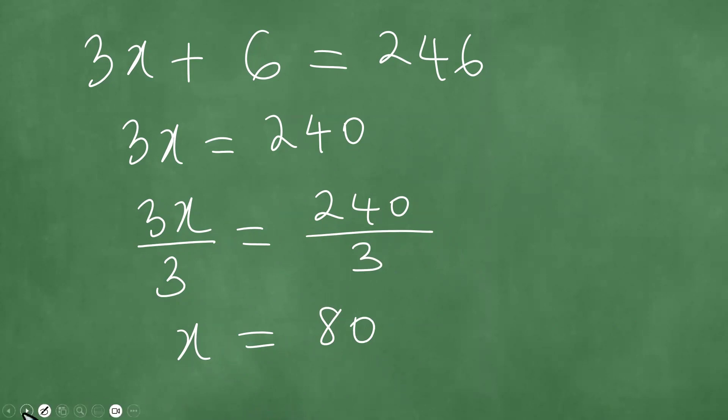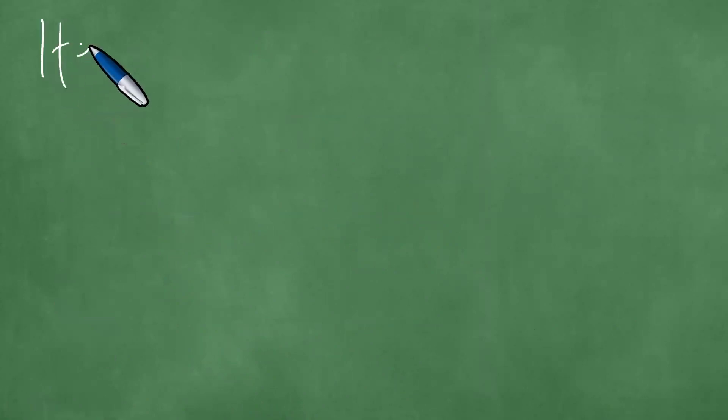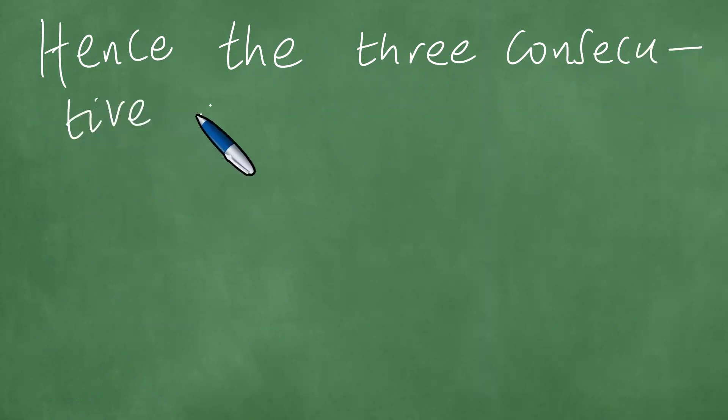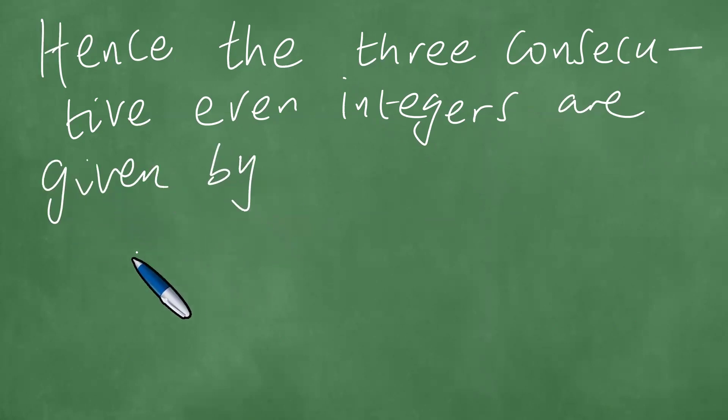So if x equals 80, hence the three consecutive even integers are given by: you have 80, you add 2 you get 82, you add another 2 you get 84.